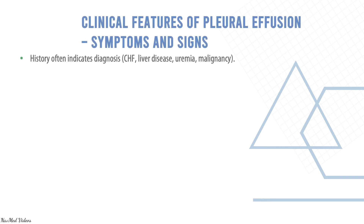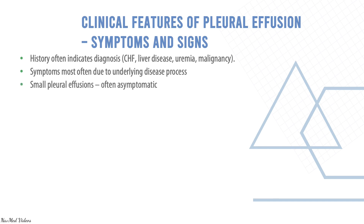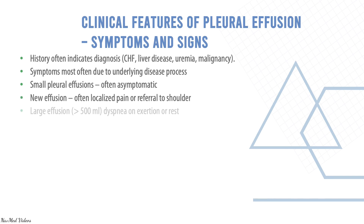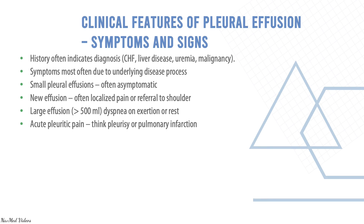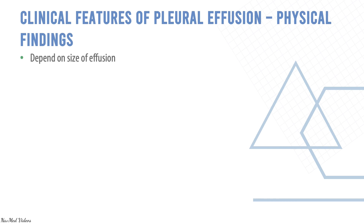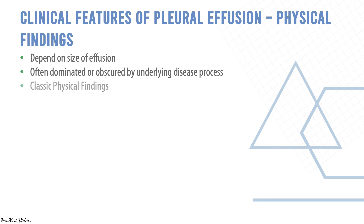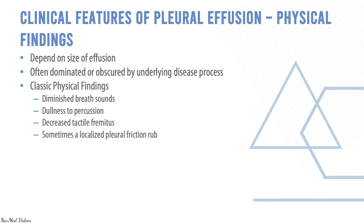Clinical features: the history often indicates the diagnosis. Small pleural effusions are often asymptomatic. New effusion often causes localized pain or referred pain to the shoulder. Large effusions cause dyspnea on exertion or at rest. Acute pleuritic pain should suggest pleurisy or pulmonary infarction. Clinical features also depend on the size of effusion and are often dominated or obscured by the underlying disease. Classical findings include decreased breath sounds, dullness to percussion, decreased tactile fremitus, and sometimes a localized pleural friction rub. With massive effusions, signs of mediastinal shift may be seen.